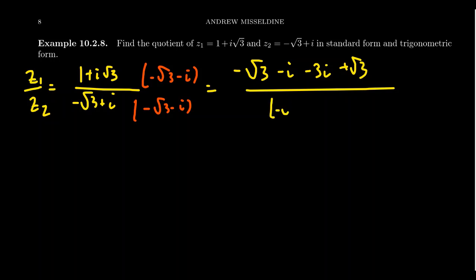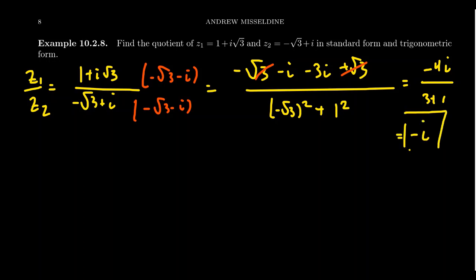In the denominator, using the conjugate gives a sum of squares: (−√3)² + 1² = 3 + 1 = 4. In the numerator, the √3 terms cancel, and the imaginary parts combine: −i − 3i = −4i. So the result is −4i/4 = −i. Complex division using conjugates was manageable, though a bit harder than real-number division.